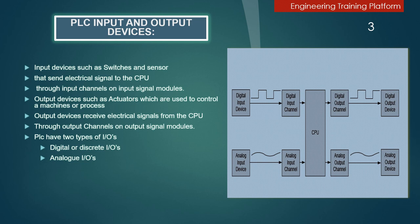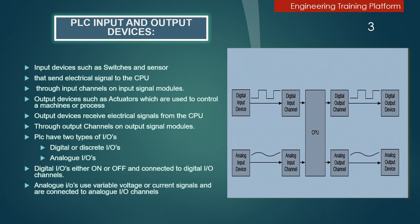PLC have two types of I/Os: Digital or discrete I/Os, 0 or 1, and Analog I/Os. Analog I/Os use variable voltage or current signals and are connected to analog I/O channels. Analog I/O channels are used for variable applications such as temperature, pressure, rate of flow, etc.